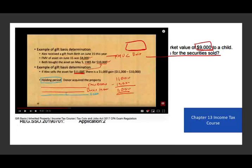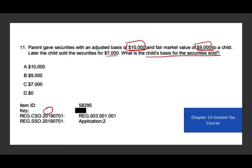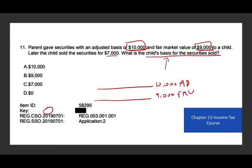When you have a gift situation — and I have a whole 24-minute lecture about basis of gift — you have to know those basis very well. The key rule is you don't know the basis until you sell the asset. The adjusted basis was $10,000 and the fair market value was $9,000. The securities were sold for $7,000. The line closest to the sale price determines the basis — in this case, $9,000 is closest to $7,000. Therefore, the basis is $9,000.